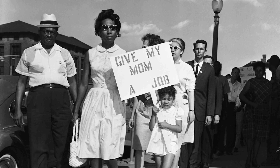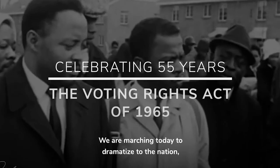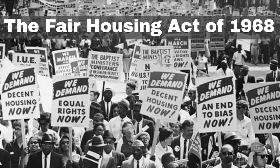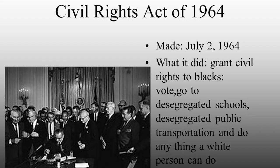The Civil Rights Act was later expanded to bring disabled Americans, the elderly, and women under its umbrella. It also paved the way for two follow-up laws: the Voting Rights Act of 1965, which prohibited literacy tests — such as how many bubbles are in a bottle of soap — and other discriminatory voting practices; and the Fair Housing Act of 1968, which banned discrimination in the sale, rental, and financing of property. The Civil Rights Act was signed into law on July 2nd, 1964 by President Lyndon Baines Johnson.